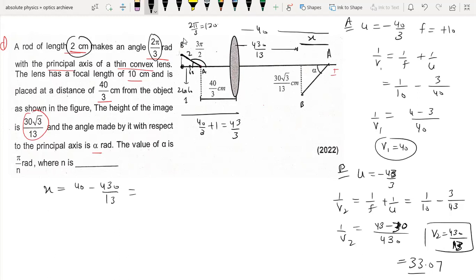Now tan alpha equals perpendicular, which is 30 root 3 by 13, upon base which I calculated as 90 by 13.